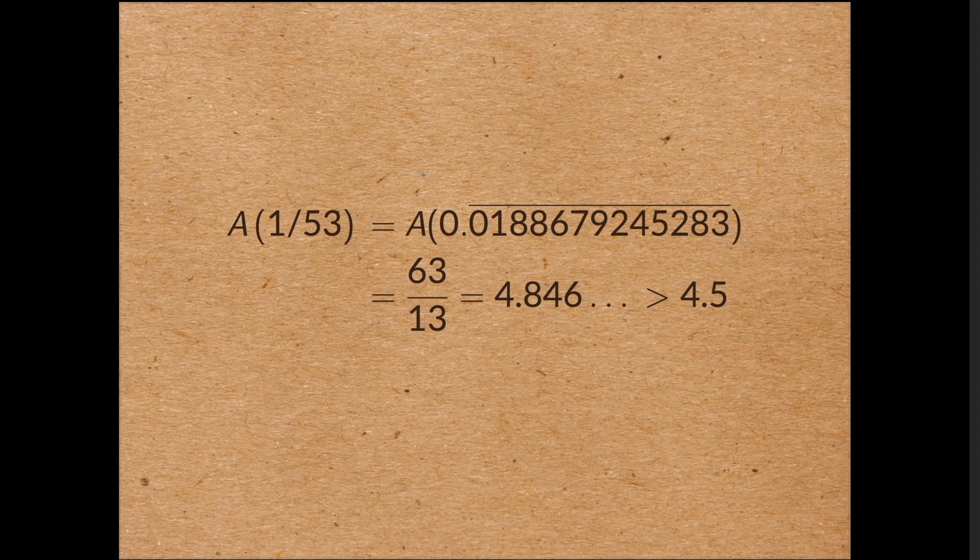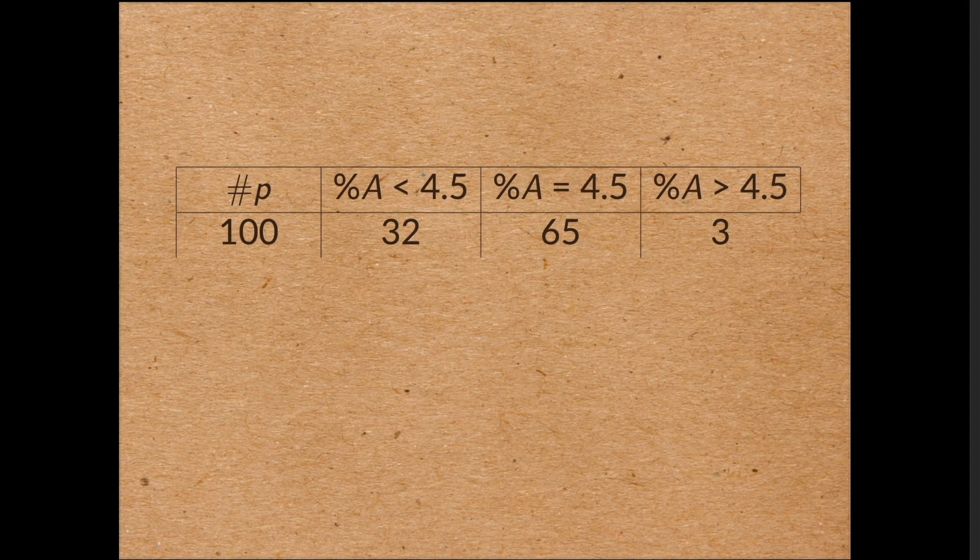So now we might ask, if we take more and more primes, is it more or less likely that the average will be bigger than 4.5 or less than 4.5? Well, let's ask the computer. If we take the first 100 primes, 32 have an average digit of less than 4.5, 65 have an average digit equal to 4.5, and only 3 have an average digit strictly bigger than 4.5.